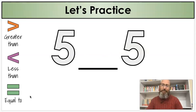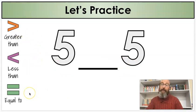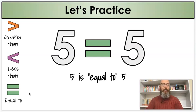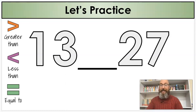What about this one? I have two fives — a five and a five. Is five greater than five, less than five, or equal to five? Equal could also mean the same as. It's the same, it's equal, it's equal to. So what would our sentence be? Five is equal to five. We're going to do a few more, just for practice. Thirteen and twenty-seven — the numbers can get larger.